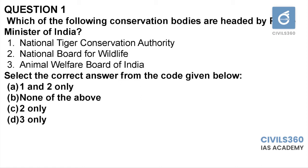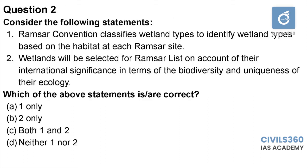National Board for Wildlife is also a statutory body and it is headed by the honorable Prime Minister. Animal Welfare Board of India is an advisory body, also statutory, and headed by the Union Ministry of Environment. Therefore the answer is option C: National Board for Wildlife.